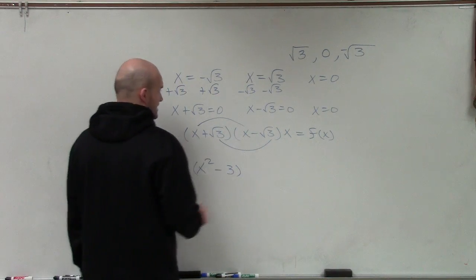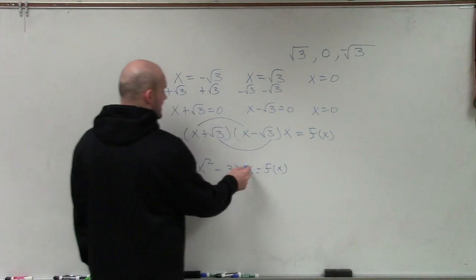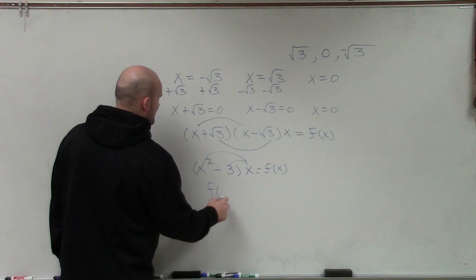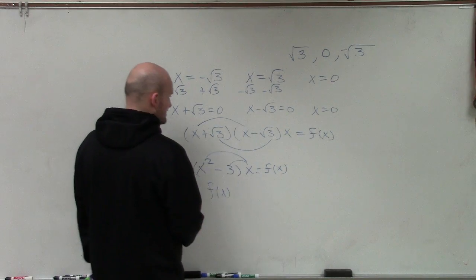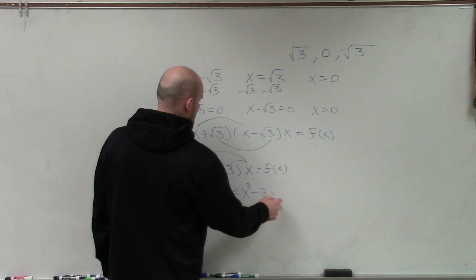And then that is going to produce then times x equals f of x. Now I can distribute this x, so therefore my final polynomial is going to be f of x is equal to x cubed minus 3x.